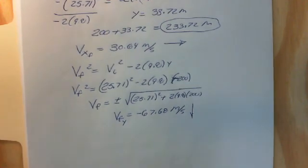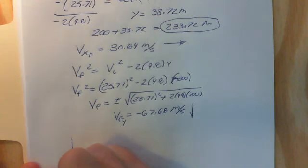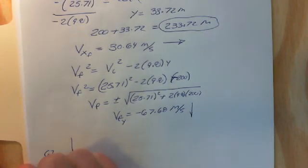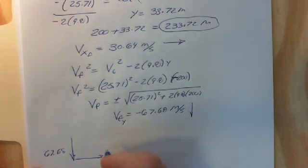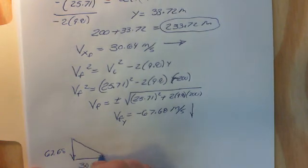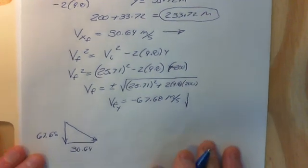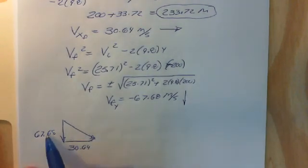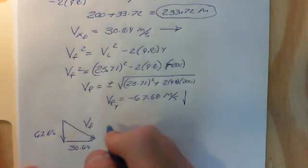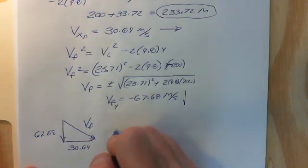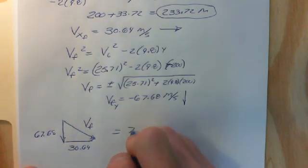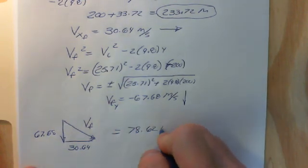Now all we have to do is add the two vectors together. We have a velocity coming down of 67.68 and a velocity coming across of 30.64. We need to find the hypotenuse, so we fall back to the Pythagorean theorem: the square root of 67.68 squared plus 30.64 squared. That gives me a final velocity at impact of about 78.62 meters per second.